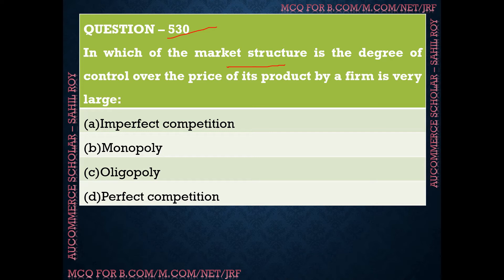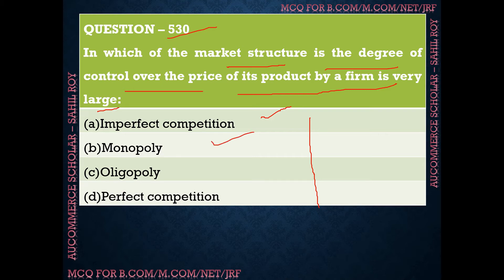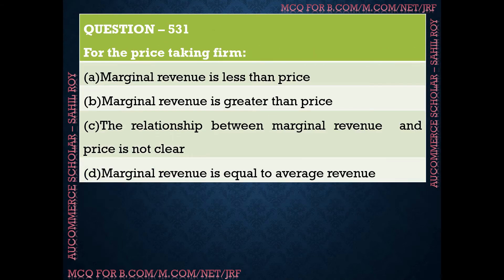Question number 530: In which market structure is the degree of control over the price of its products by a firm very large? Options are: imperfect competition, monopoly, oligopoly, and perfect competition. The correct answer is option B — monopoly. In monopoly, the producer has the maximum control over the price of their product. Monopoly is the market structure where degree of control over price by a firm is the largest.